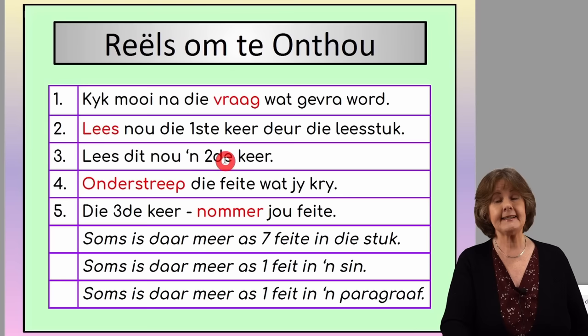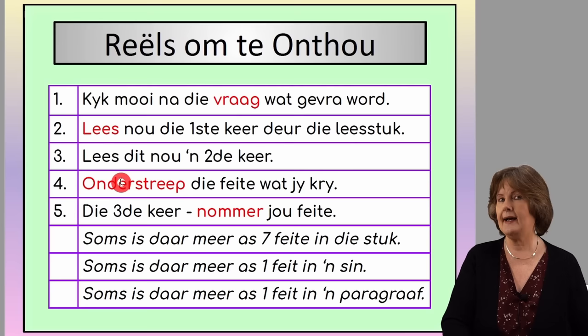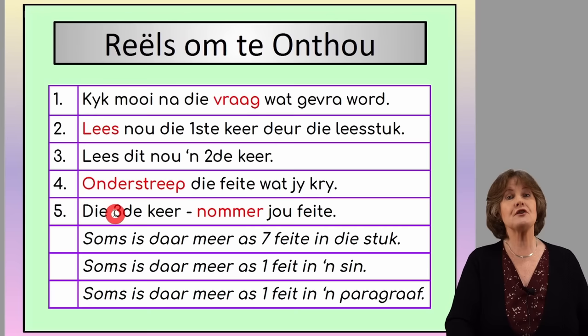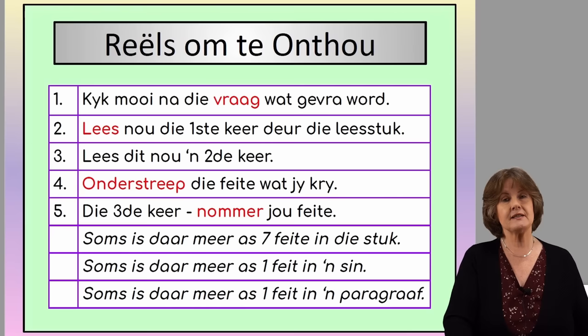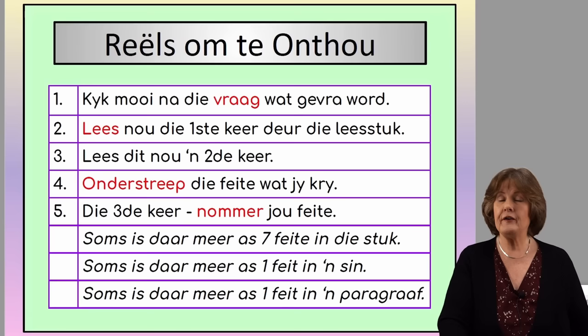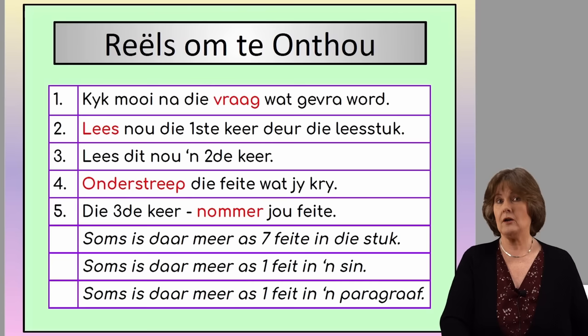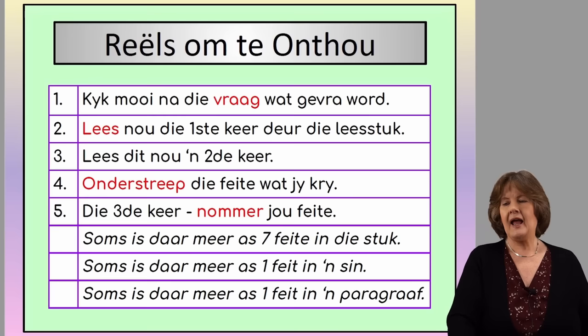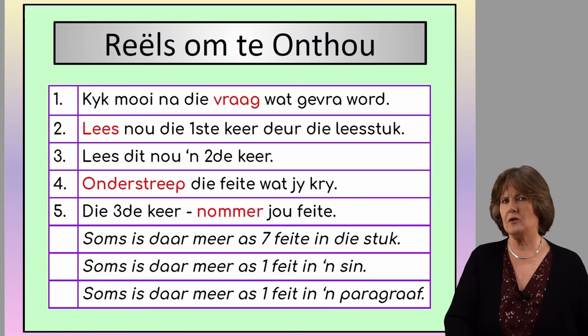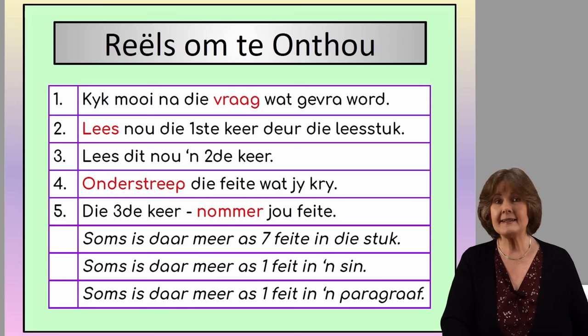Then you read through it a second time. This time, with the question in mind, you underline the relevant facts that you find. Then you read through it a third time, and now you number those facts. You can underline or highlight the facts you find. Often you find more than seven facts — we always only need seven. Often you find nine or ten; you'll never find less than seven. Then you take your seven easiest ones. Also remember, there can be more than one fact in a sentence. You need to split up those facts and make separate sentences.